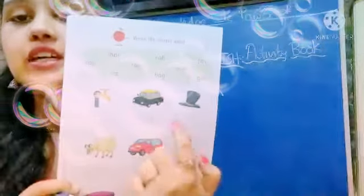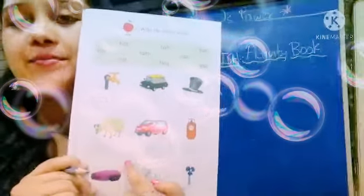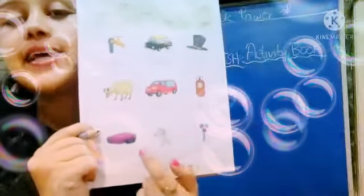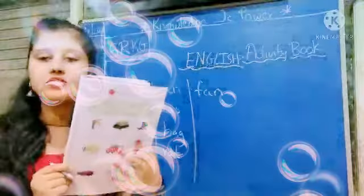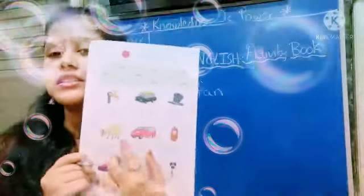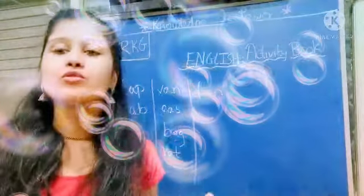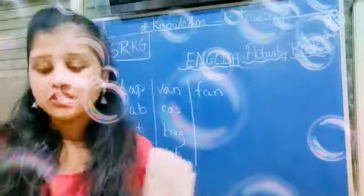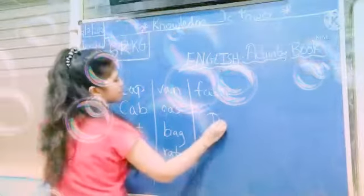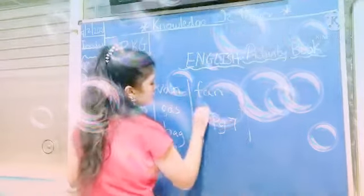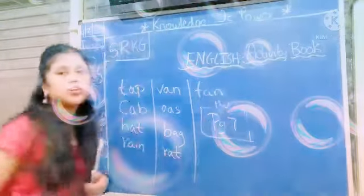That is TAP, CAB, HAT, RAM, VAN, GAS, BAG, RAT and FAN. So all these three-letter words you have to write in the correct boxes. These three-letter words, write them in their correct boxes. So this is your homework for today — page number 7.